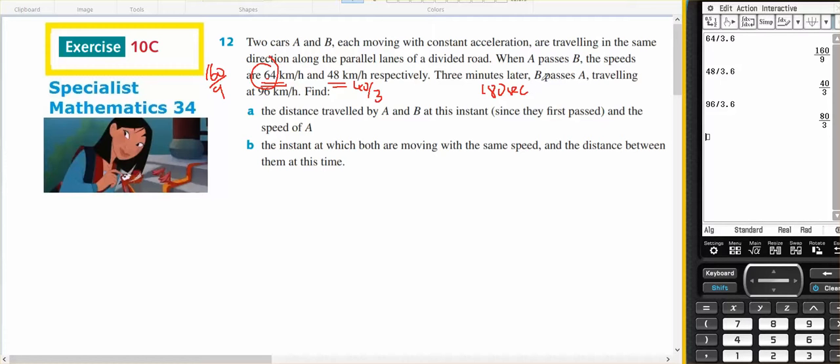OK, so if at the start, A passes B, they're at the same location, and if three minutes later, B passes A, they're at the same location. So both cars have traveled the same distance in those three minutes, and it was traveling at 96, which is 80 on 3.